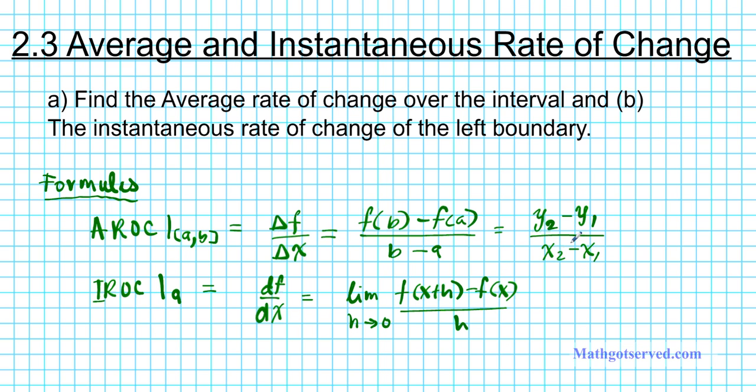Now two things you want to keep in mind. When you're thinking about average rate of change, think about the secant line. The secant line through two points. And then, for the instantaneous rate of change, you want to think about the tangent line. So these are the graphical representations of these two values we're computing.